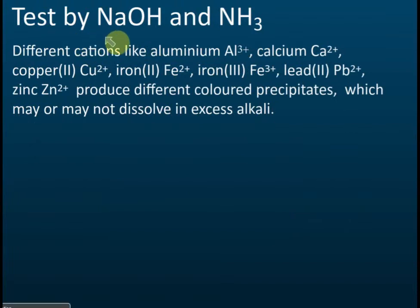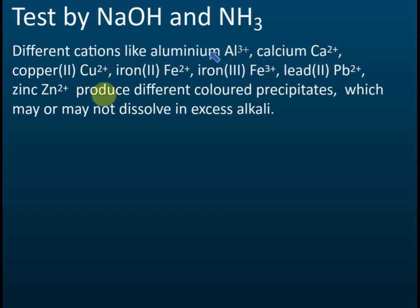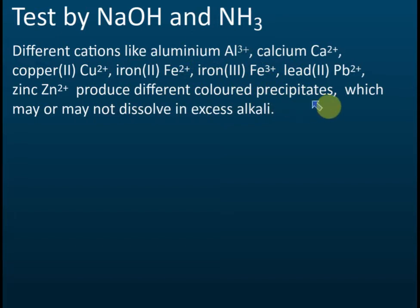When tested with sodium hydroxide and ammonia, different cations such as aluminium, calcium, copper, iron 2, iron 3, lead, and zinc produce different colored precipitates, which may or may not dissolve in excess alkali.